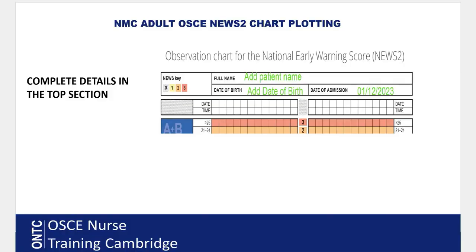First, complete the patient details at the top of the chart. You can take these from the patient admission form provided in the candidate briefing. Write the patient name, date of birth, and date correctly. The date format is: day slash month slash full year — for example, 01/12/2023. If the document says 'today,' use your actual exam date.